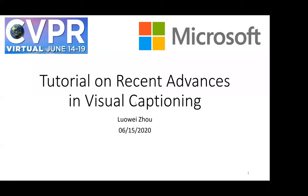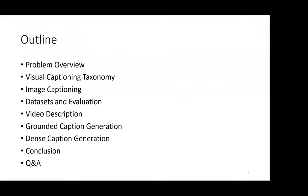Let's get started. My colleague Joe Gan just gave a comprehensive review on VQA and vision reasoning. Today I will be covering another popular topic for vision language, which is visual captioning. I'm Rowe from Microsoft, a colleague of Joe Gan. Here's the outline of my talk: I want to first give a brief overview on the problem and then lay out the taxonomy of visual captioning.